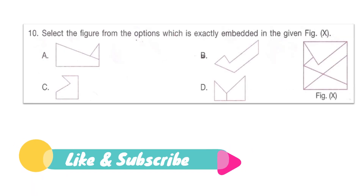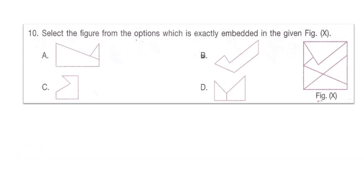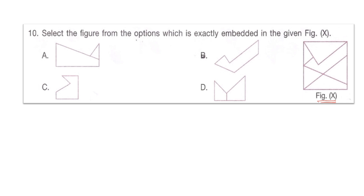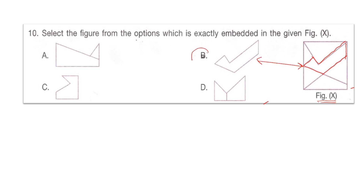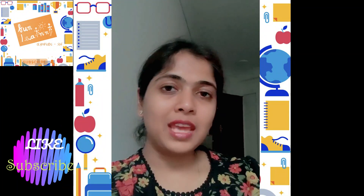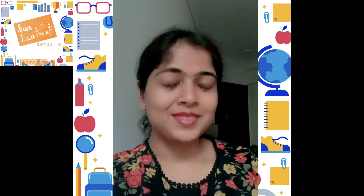Next question: select the figure from the options which is exactly embedded in the given figure X. Is it option A, B, C, or D? Looking at all the images, if we try to match option B against figure X — matching each line and angle — we can see that option B exactly embeds within figure X. The right answer is option B. That brings us to the end of the Logical Reasoning section. Hope you solved along and got the concepts and tricks. Click the next video link to solve the other sections of this paper!